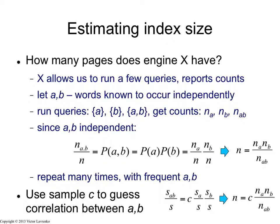What do I have on the right side? On the right side, I have probability of a times the probability of b. Probability of a is the number of pages that contain a, that's N of a, divided by the total index size, N. Probability of b is the number of pages that contain b divided by the total number of pages, N.